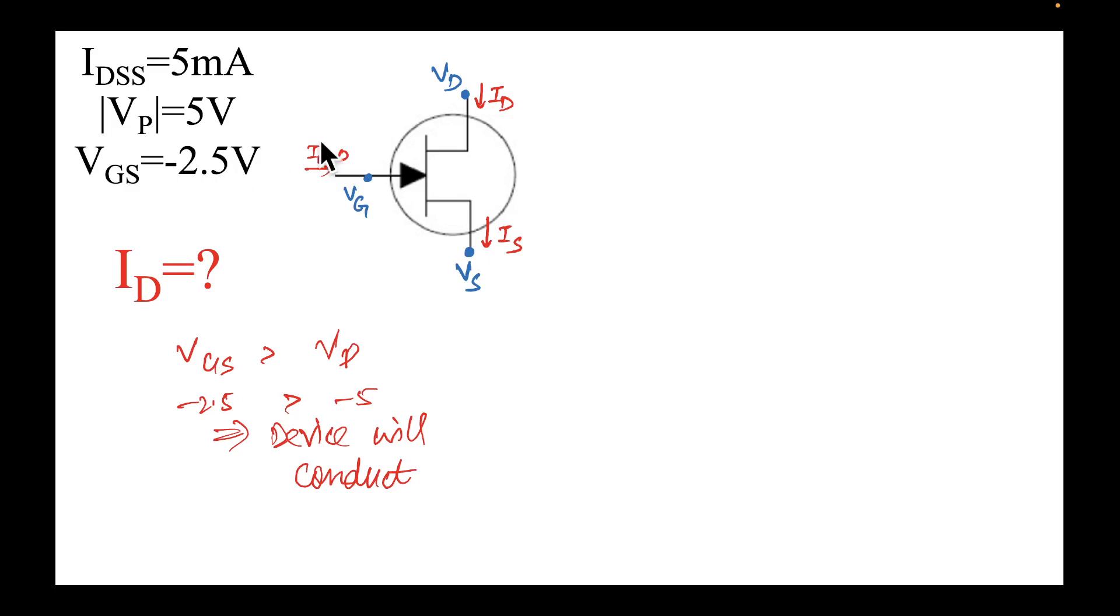I have just denoted the currents over here. You can see IG is 0—we neglect the gate current. We assume that in the depletion region no current is flowing through the gate, and consequently ID will be equal to IS because of KCL over here. If no current is flowing in, ID will be equal to IS. I have denoted VD, VG, and VS just so that we are able to understand where it is. This is the formula that we use—we establish that the device will conduct.